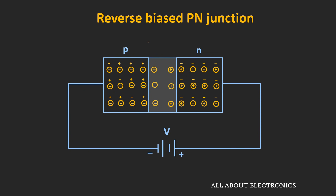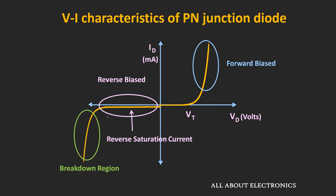In the reverse bias condition, there is hardly any flow of current from the P-side to the N-side. But a small amount of reverse saturation current flows from the N-side to the P-side. This current flows due to the minority charge carriers. And even if we increase this reverse bias voltage, there is hardly any change in this reverse saturation current.